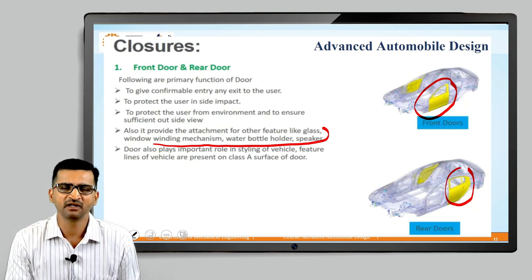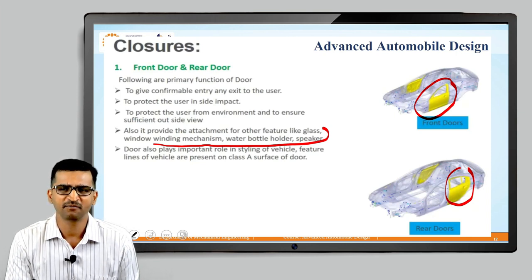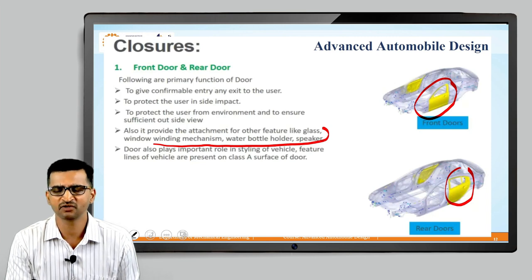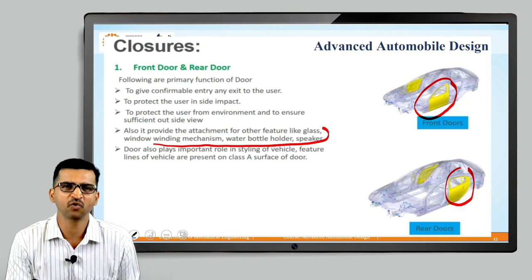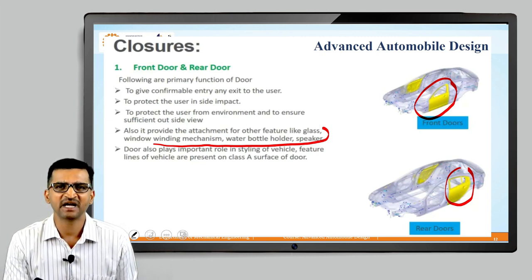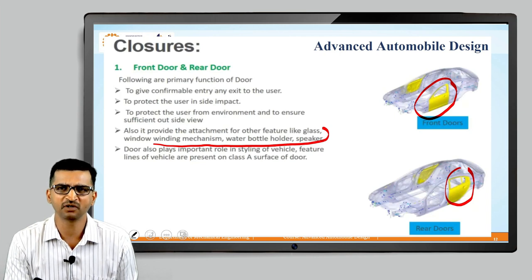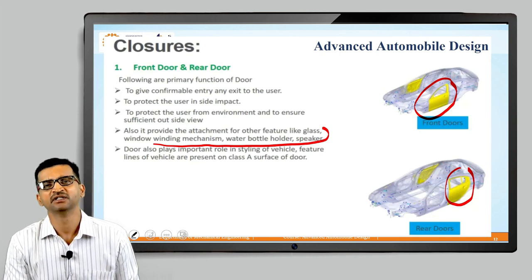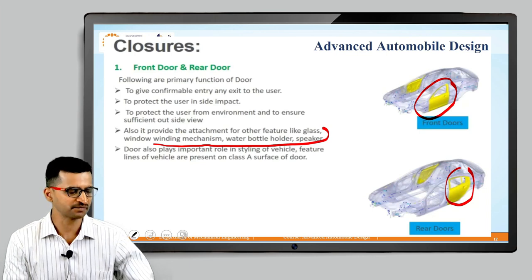To review: first, the door allows passenger entry into the compartment; second, it protects the passenger in case of collision or side impact; and third, it holds various elements like glass, speakers, bottle holders, and so on. These are the important functions of doors.